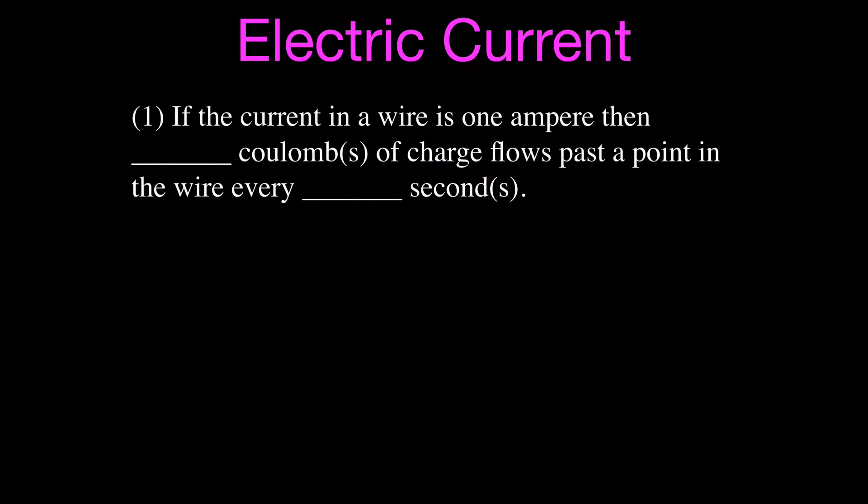We're going to do first a couple of simple fill-in-the-blank problems. You can pause this video and try to fill in the blanks. This problem has to do with the definition of current or what is an ampere. It says if the current in a wire is one ampere, then how many coulombs of charge will flow past a point in that wire every how many seconds? You should remember that one ampere is one coulomb per second — that's the definition of an ampere: one coulomb of charge flows past a point in a circuit every one second.